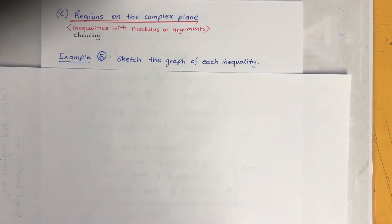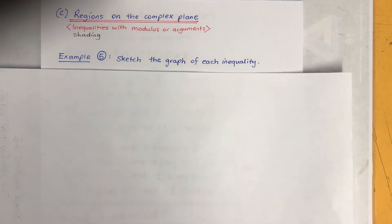Regions on the complex plane is the last part of the topic. Let's have a look at the example. Before we do it, regions indicates we're going to have to deal with inequalities and shading.